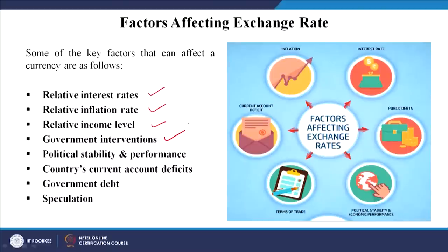The government also intervenes sometimes. Whenever the government feels that we need to save our domestic players or boost up our exports, the government intervenes and changes maybe the interest rate, and the monetary policies are adjusted accordingly. Similarly, political stability and performance - the exchange rate for a country is also largely affected by how much political stability there is. If the country is going through instability, the currency would become weak. Foreign players who want to invest in your country would look at how much stability there is.